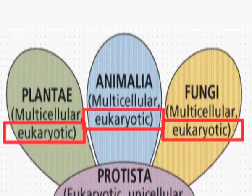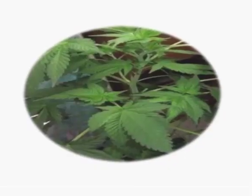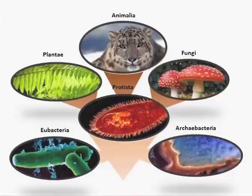Initially, Fungi was placed along with Plantae, but because they are not differentiated into three distinct regions — root, stem, and the plant body — there is no differentiation of the plant body. Therefore, they were grouped separately into Kingdom Fungi. Plantae can manufacture their own food, while animals are heterotrophs. So Whittaker grouped these into five kingdoms.